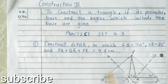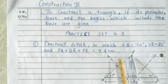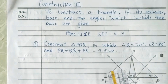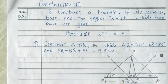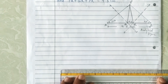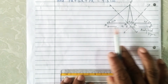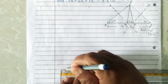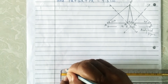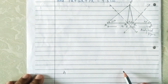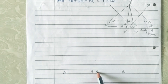Now draw the perpendicular bisector of segments PA and PB. The perpendicular bisector of PA will intersect base line AB at point Q, and the perpendicular bisector of PB will intersect base line AB at point R. So let us now draw the base AB of length 9.5 cm.